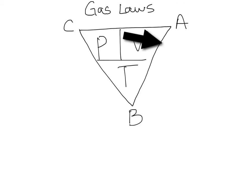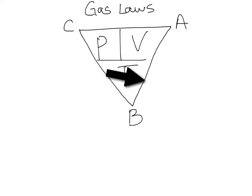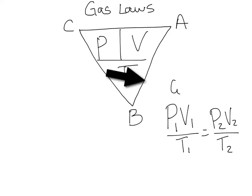If temperature is being held constant, then you put your finger over the bottom part, which is the temperature, and you see that B is on the bottom. So Boyle's Law is P1 V1 equals P2 V2. And then the combined gas law is all of them together: P1 V1 over T1 equals P2 V2 over T2 — combining all three laws together.